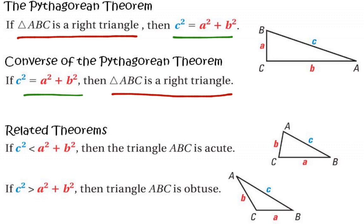So the converse of the Pythagorean Theorem tells us: if we've got three values and we plug them in for A, B, and C, and we find out that the sum of the squares of the two smaller numbers adds together to make the square of the bigger number, then you know you have a right triangle without even looking at it. All you need are the numbers.